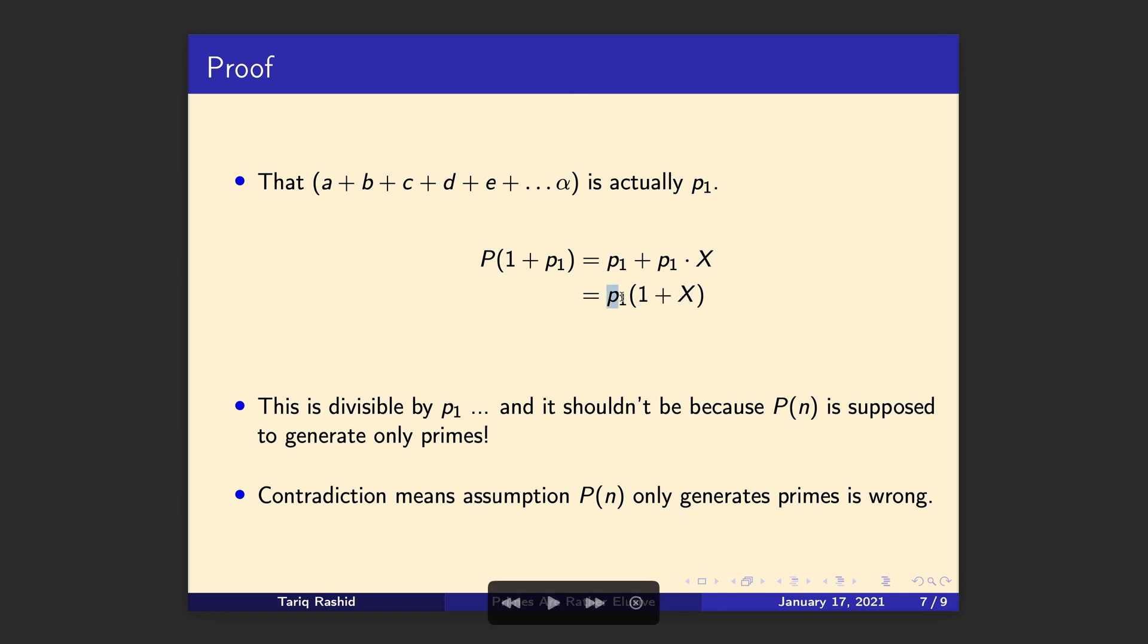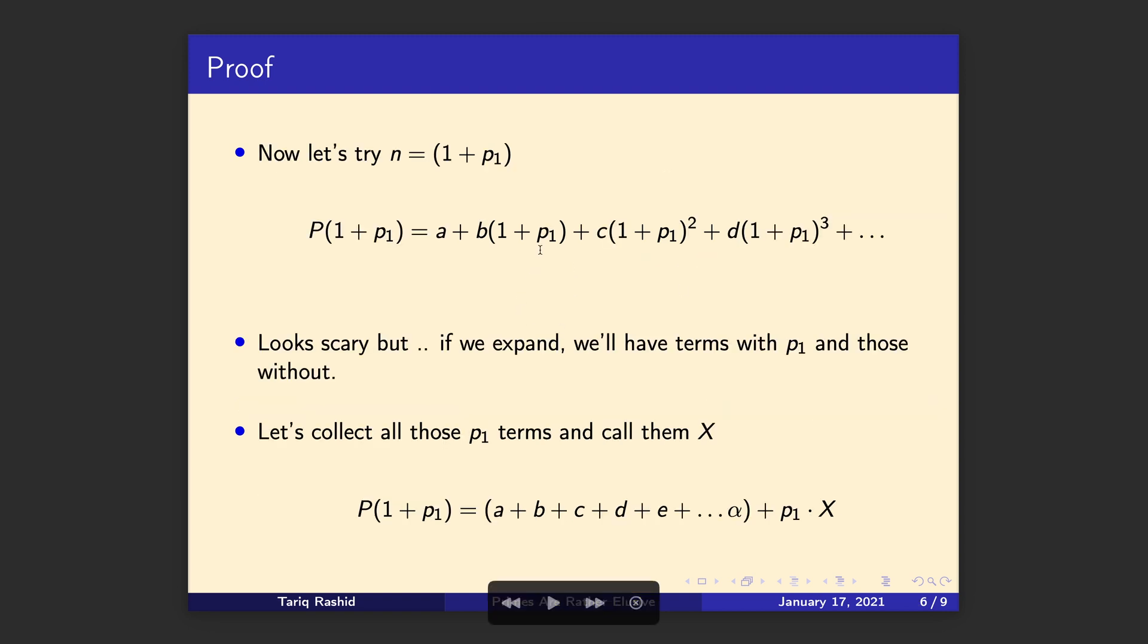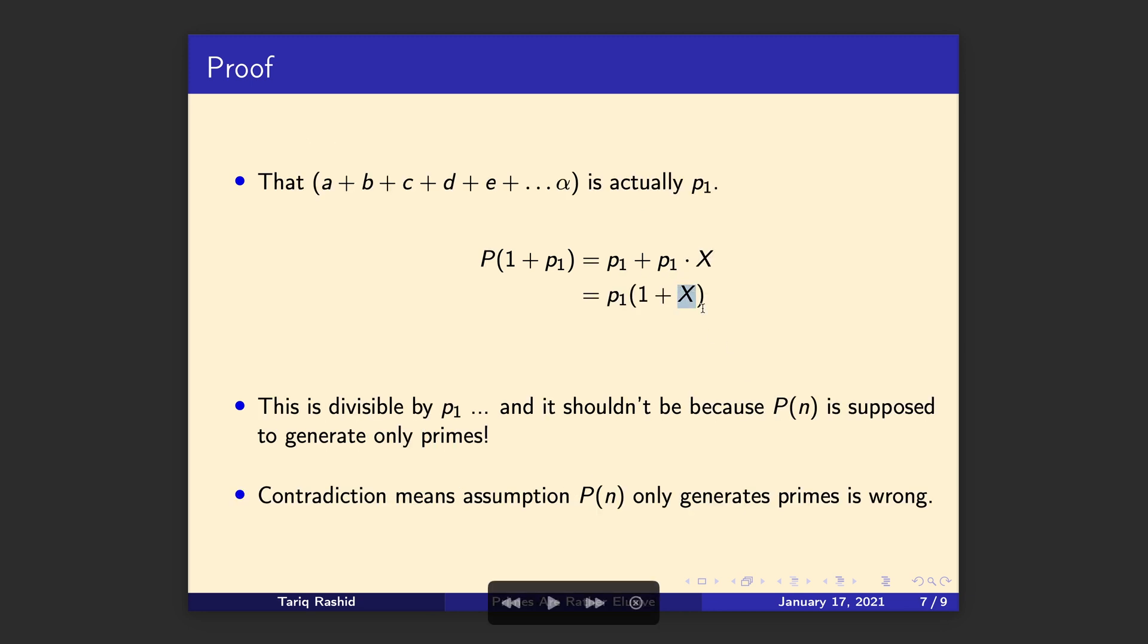Because P was only ever supposed to generate primes, only primes. But we've just shown that it can generate a number that isn't prime. Now just to be rigorous, we know P₁ is a whole number. x is also a whole number. You might be saying, well, what if that's a half or a third or something else. x is a whole number because it's the sum of multiplied combinations of those terms. If you expand these out, there's no introduction of any fractions. It's all whole numbers. So x is a whole number. So whole number times whole number. So that's a contradiction.